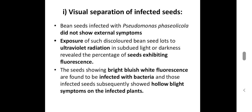Next, visual separation of infected seeds. There are some diseased seeds which do not show external symptoms, for example Pseudomonas paciolicola. These seeds are exposed to UV radiation, which reveals fluorescence. The seeds which show bright bluish-white fluorescence are infected with the bacteria and show hollow blight symptoms on infected plants.